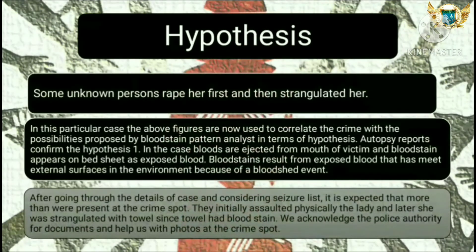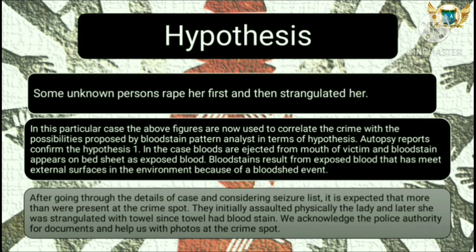Hypothesis: An unknown person raped her first and then strangulated her. The figures from the crime scene were used to correlate with the possibilities proposed by bloodstain pattern analysis. Autopsy reports confirmed the hypothesis. In this case, blood was ejected from the mouth of the victim, and blood stains appeared on the bed sheet as exposed blood meeting external surfaces due to the bloodshed event. Considering the seizure list, it is expected that more than one person was present at the crime spot — they initially assaulted the lady physically, and later she was strangulated with the towel, as the towel had blood stains.